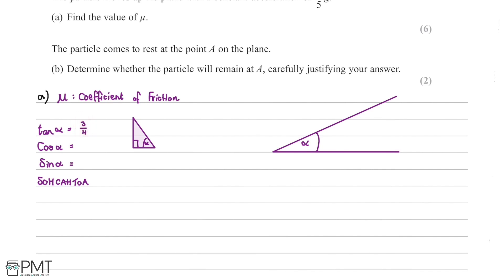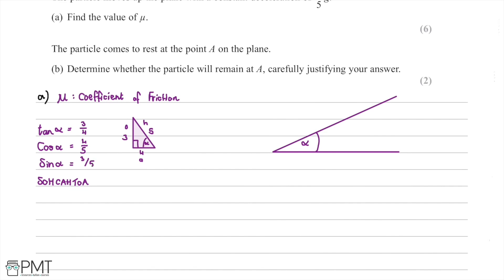Filling that into our diagram: the adjacent is 4, the opposite is 3, and using the 3-4-5 triangle rule or Pythagoras, the hypotenuse H is 5. Therefore cos alpha equals A over H which is 4 over 5, and sin alpha equals O over H which is 3 over 5. These values will become useful later in the question.